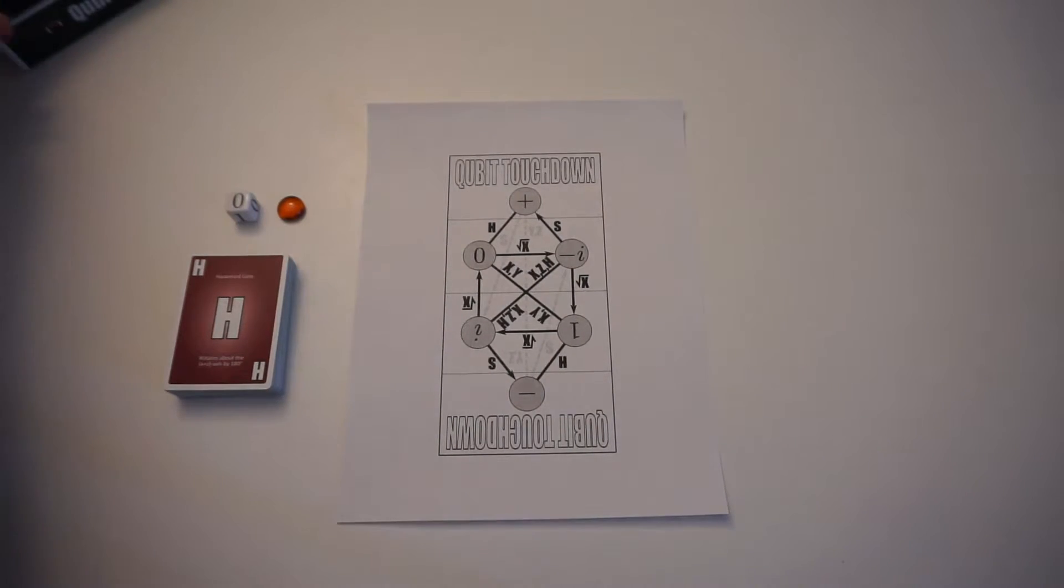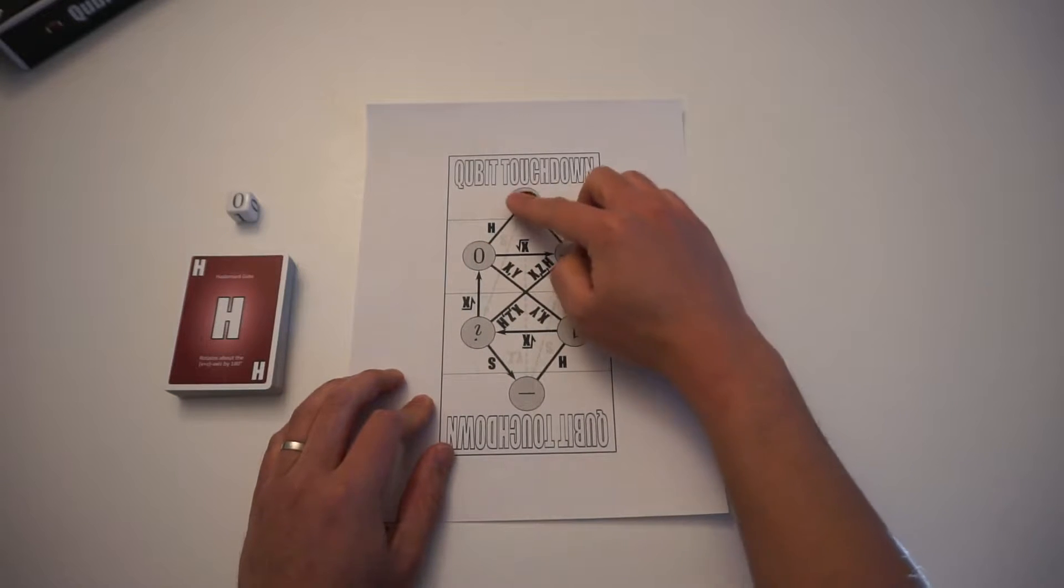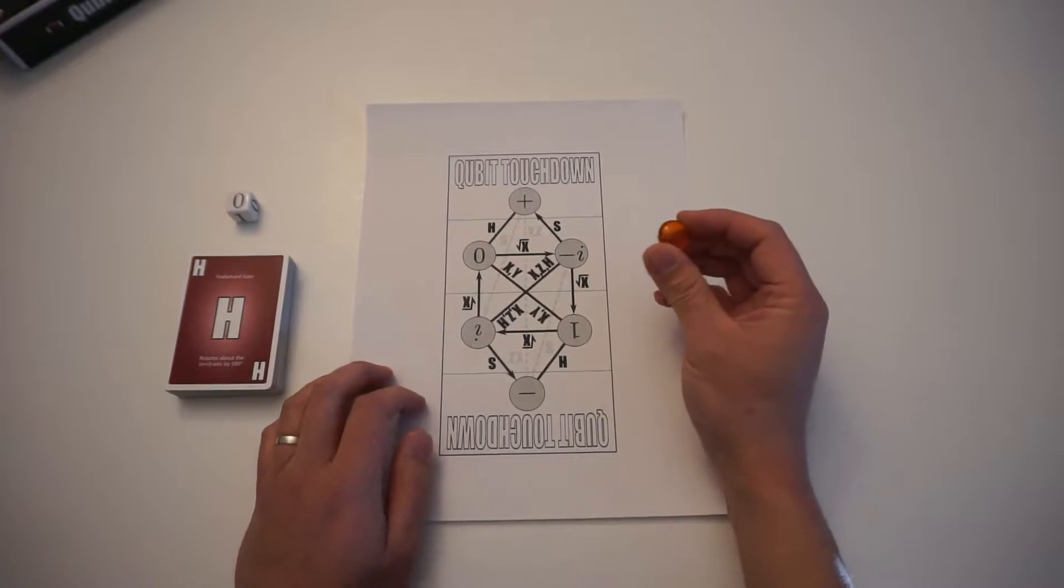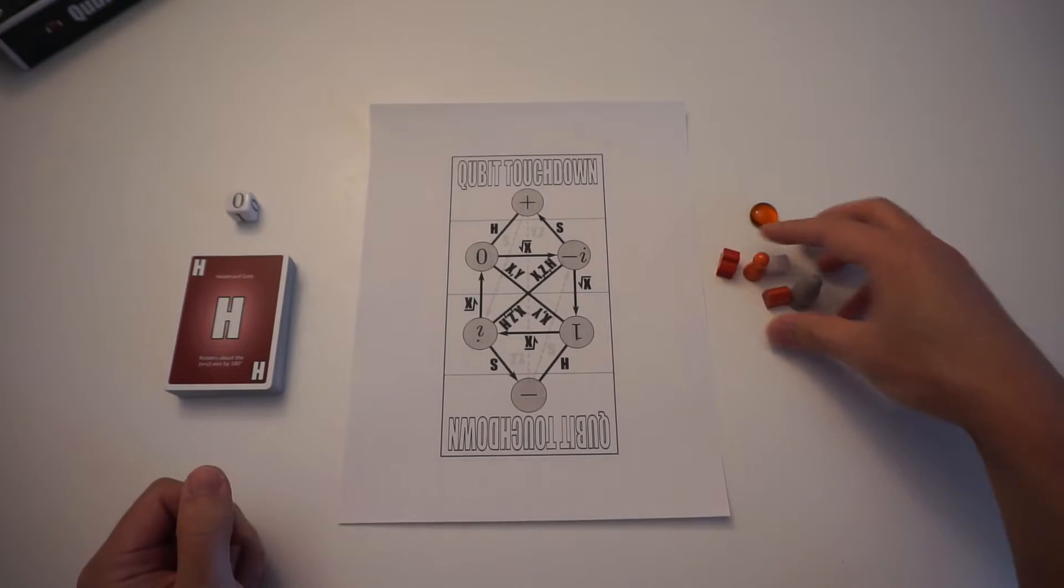So once you have the game board, you need something to play the role of the football that would move around, and so any little token will work. For example, from some other games, I took these pieces out.